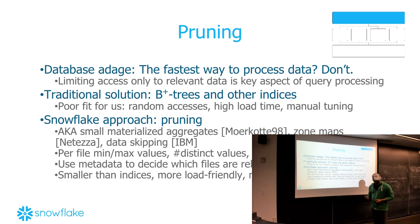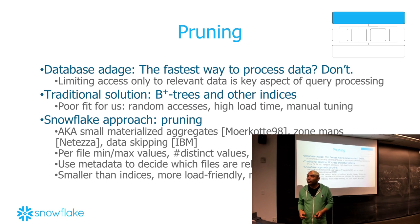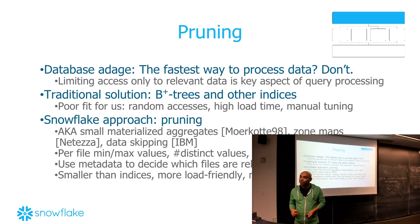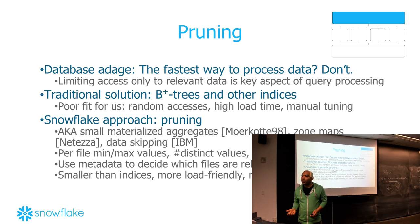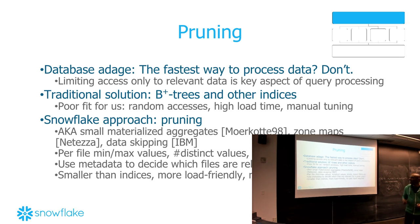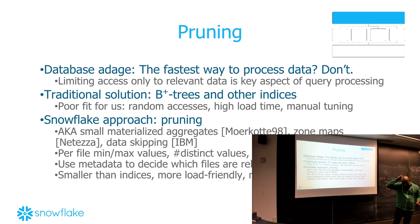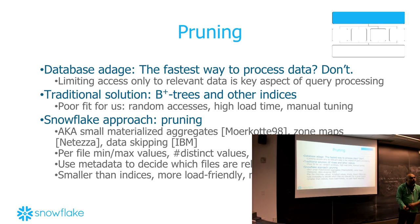Zone maps are predetermined — every partition that was ingested has a zone map. We determine the size of a partition — it's a few to tens of megabytes — and every partition has a zone map. We also maintain bloom filters on top of this. We stopped doing that for some things because our bloom filters ended up being too large and not that effective. We use bloom filters for other things, including joins.